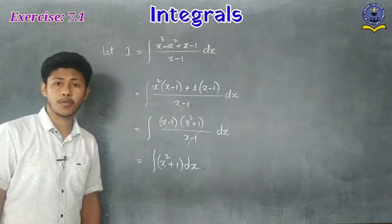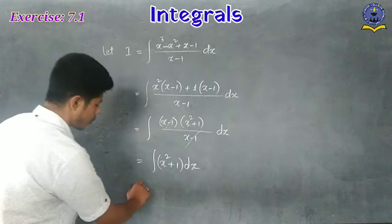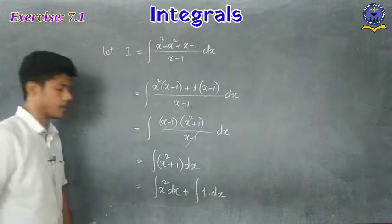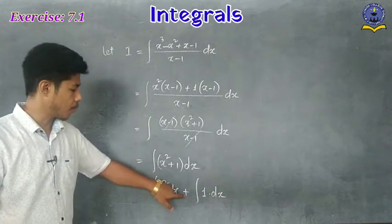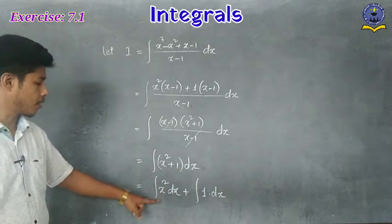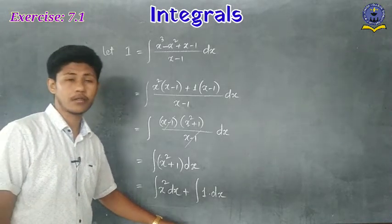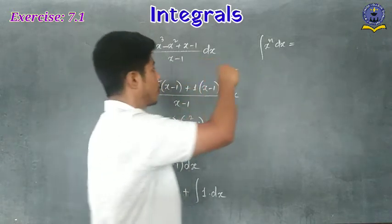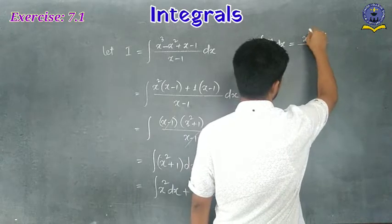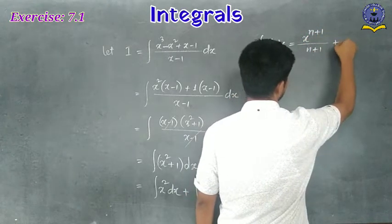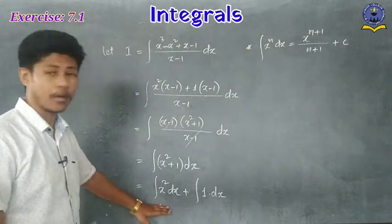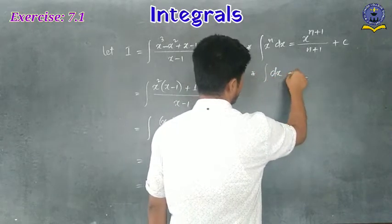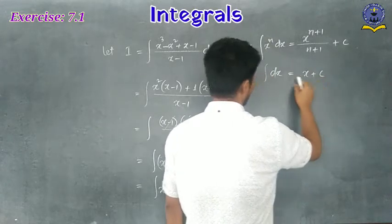After canceling (x - 1), we are left with (x² + 1) dx. We separate this into two parts: ∫x² dx + ∫1 dx. The formulas we apply are: ∫xⁿ dx = xⁿ⁺¹/(n+1) + C, and ∫dx = x + C.